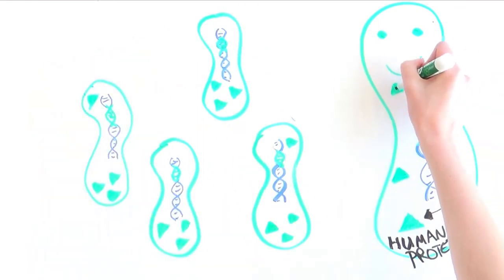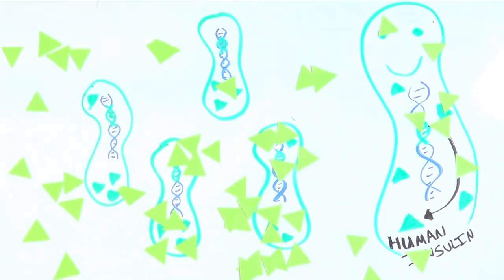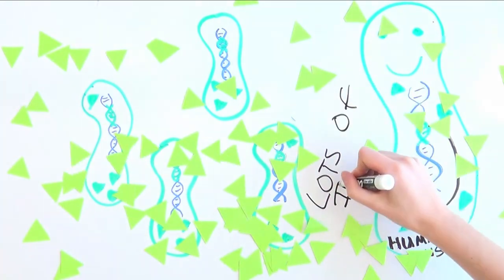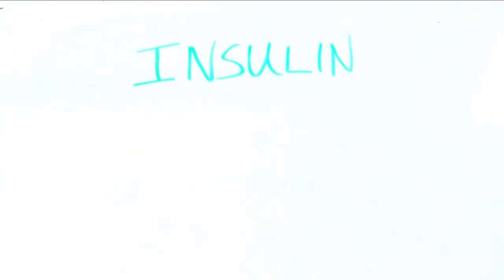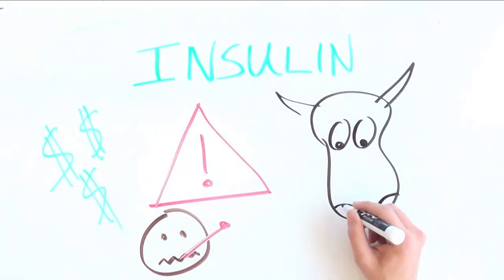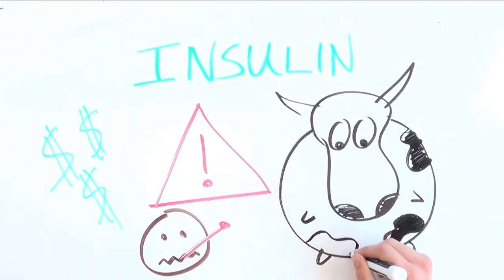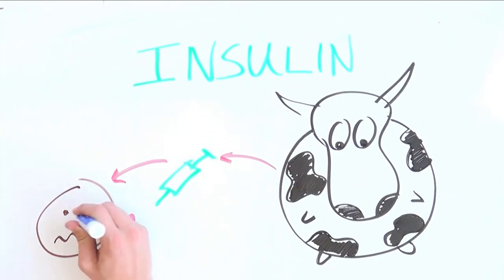So why was this technique useful for modern medicine? Well, one breakthrough was the efficient production of human insulin by introducing the human insulin gene into bacteria. This was a very significant advancement in diabetes treatment. Before using bacteria to produce large quantities of human insulin, insulin was expensive, unsafe, and less effective because it was harvested from fetal cows. In fact, the first person to get an injection of cow insulin suffered from a severe allergic reaction.